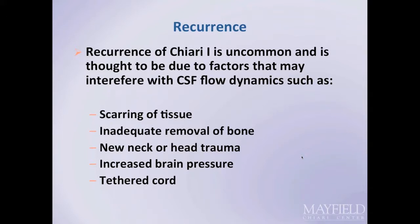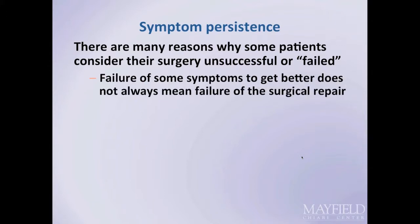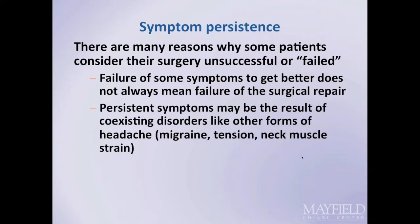Recurrence of Chiari Type 1 malformation is uncommon and is thought to be due to factors that may interfere with CSF flow dynamics, such as scarring of tissues, inadequate bone removal, or subsequent head or neck trauma resulting in scarring or anatomic alteration. A tethered cord may also be a reason for recurrence of symptoms. Failure of some symptoms to improve does not always mean failure of the surgical repair; rather, it may mean that other causes need to be sought for residual symptoms.